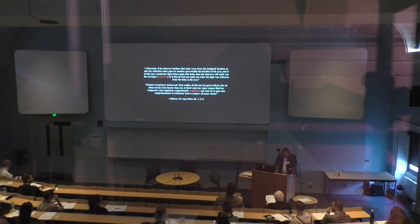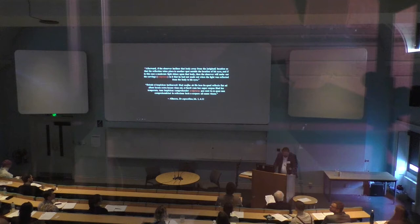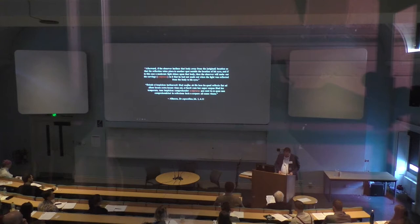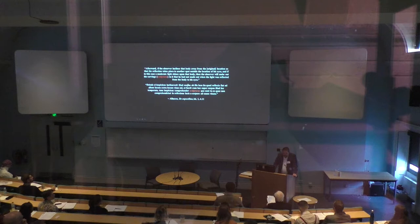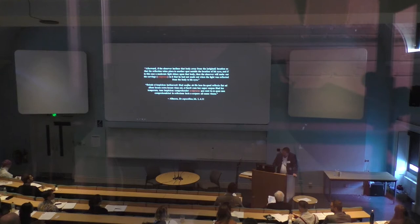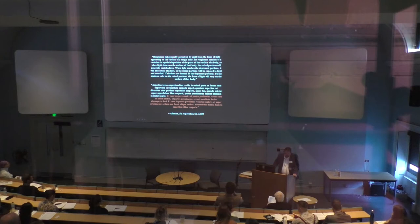We can further follow this concept by understanding how the term 'asperitas,' or roughness — a term also picked up by Ghiberti to describe the physical and aesthetic properties of relief — expressed the visible intention or characteristic of an object. Al-Haytham introduced this notion in 'De Aspectibus.' There are 22 such visible intentions, including distance, position, and corporeality. For Al-Haytham, asperitas was a visible characteristic that conveyed the material makeup of the object to the eye and relayed the virtual image to the mind. Al-Haytham explained: 'When light reaches the depressed portions, shadows are also created, so that the raised portions will also be exposed to light and revealed. If shadows are formed in the depressed portions but no shadow exists on the raised portions, the form of light will vary on the surface of that body.'